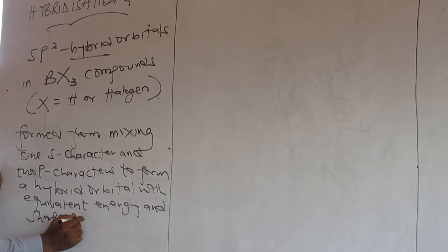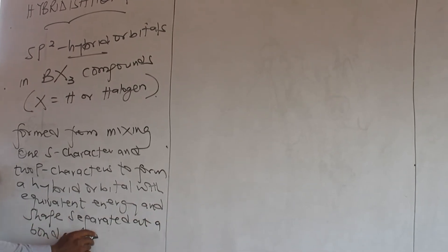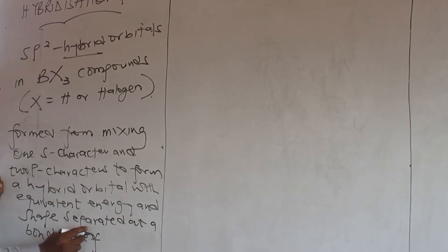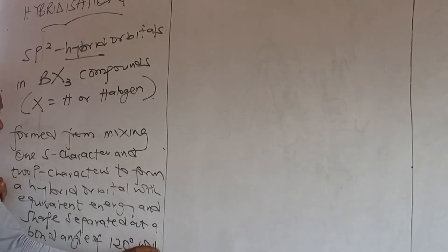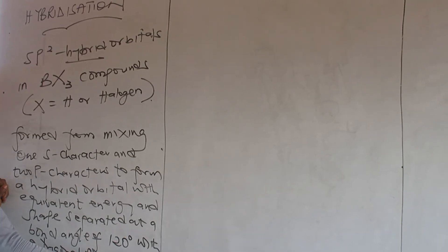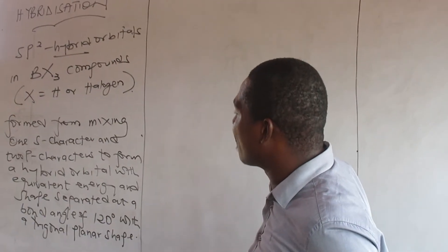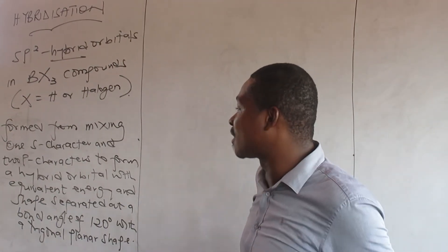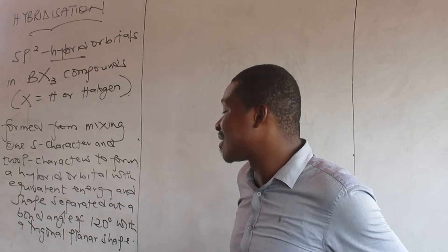Separated at the bond angle. What is the bond angle for this? 120 degrees, with a trigonal planar shape. So that is sp2. It is formed from mixing 1s character and 2p character to form hybrid orbitals with equivalent energy and shape, separated at the bond angle of 120 degrees with a trigonal planar shape.